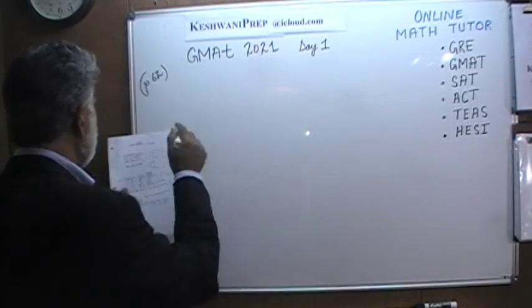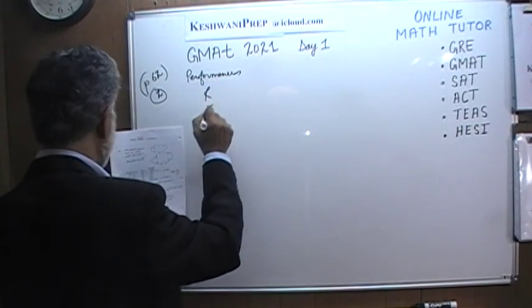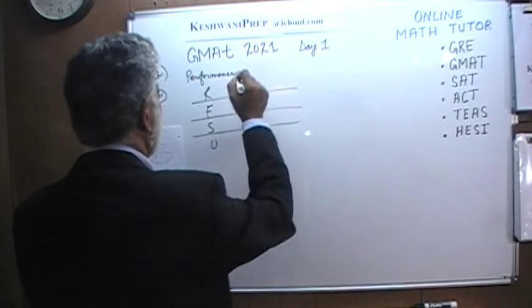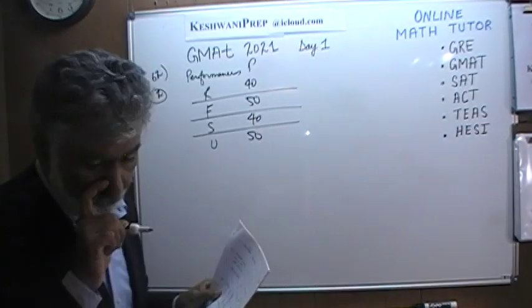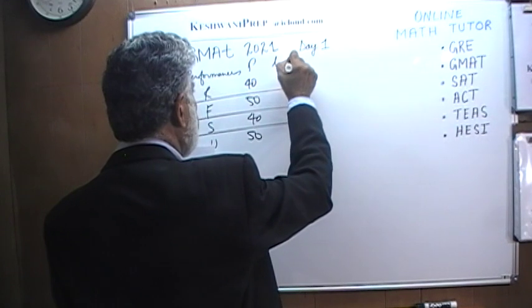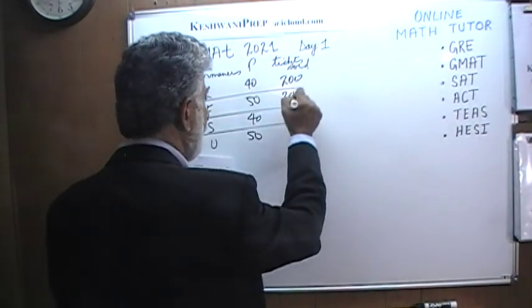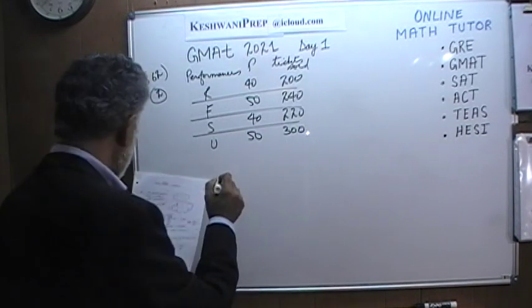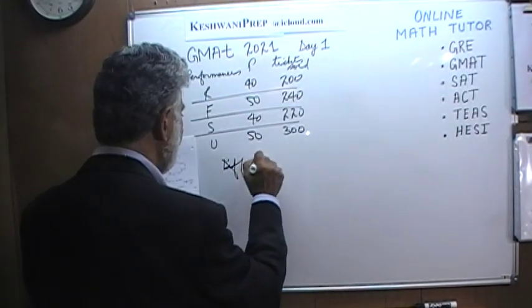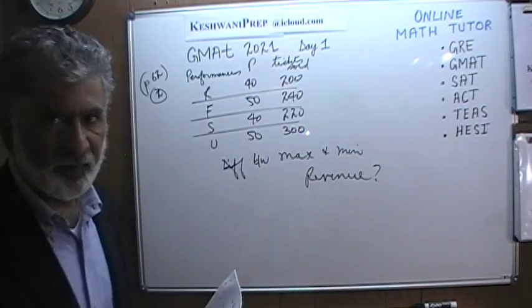Let's look at number two. We are told that we have four musical performances: R, F, S, and U. The prices are $40, $50, $40, and $50. Tickets sold were 200, 240, 220, and 300. The question is: what is the difference between maximum and minimum revenue?